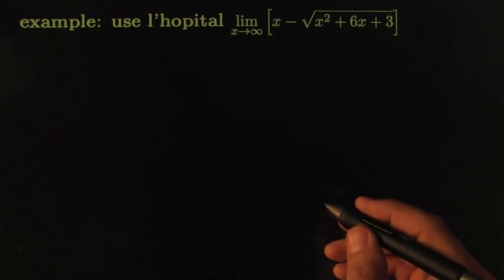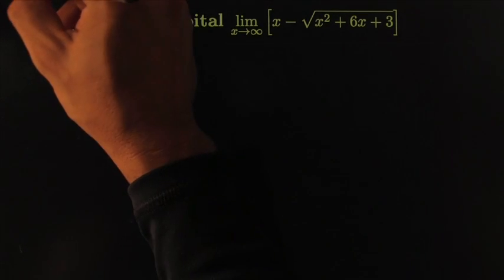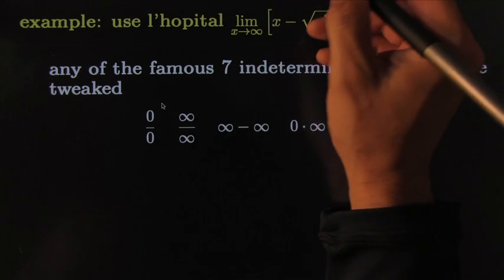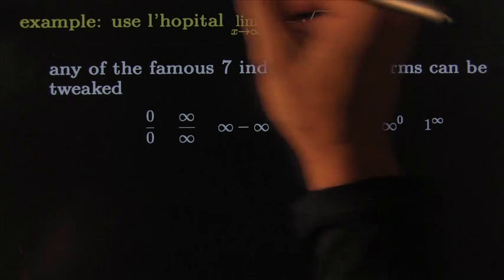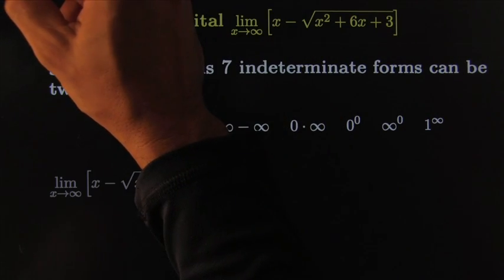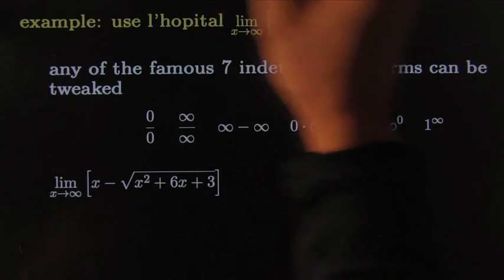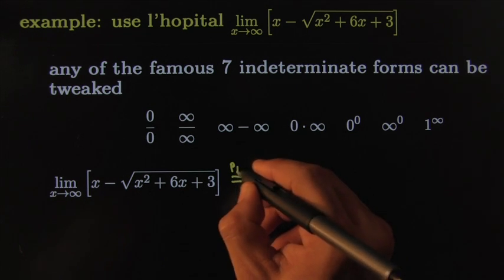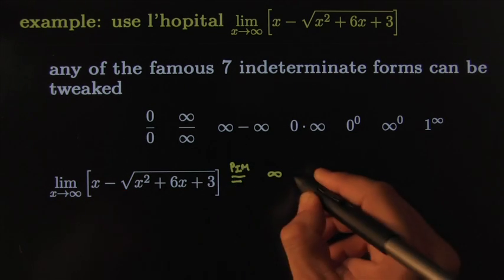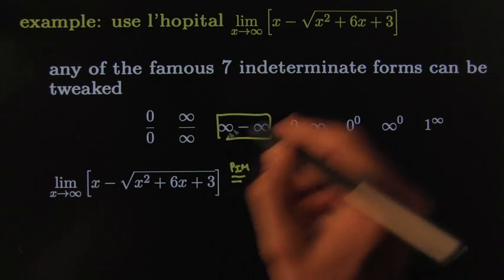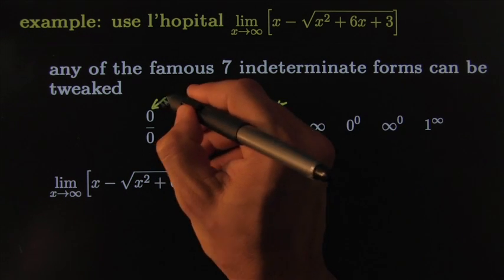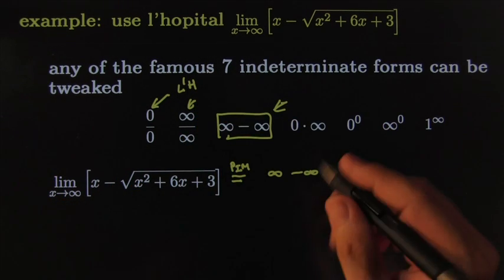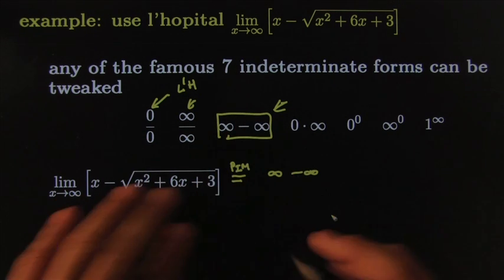Another example using L'Hôpital's rule. The promise was that any of the famous indeterminate forms can be tweaked to give you one of the L'Hôpital-friendly forms. In this case, if you try the plug-in method, it gives you infinity minus infinity — one of the famous indeterminate forms. We want to get it into L'Hôpital land, but this form is not directly usable.